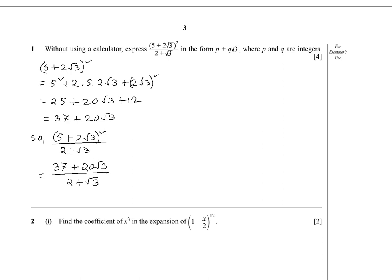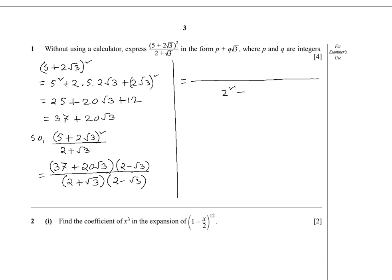We need to multiply by (2 - √3) on both the numerator and denominator to rationalize. So (2 - √3) is multiplied in the numerator and (2 - √3) is multiplied in the denominator. In the denominator we get 2² - (√3)².